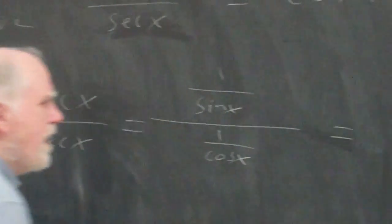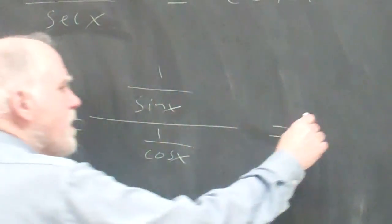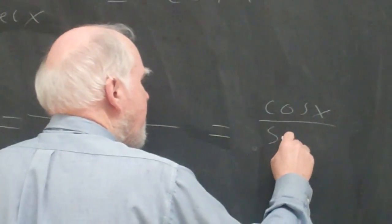Okay. And then we use our rules. This times the reciprocal of this gives us cosine over sine x. Cosine x over sine x.